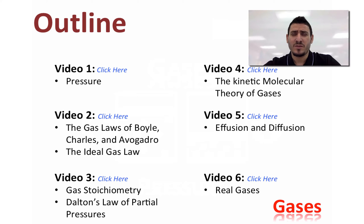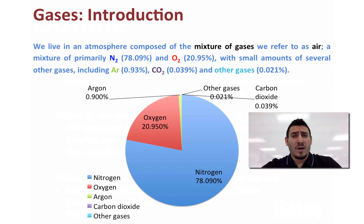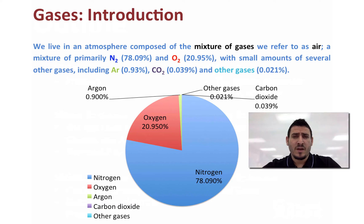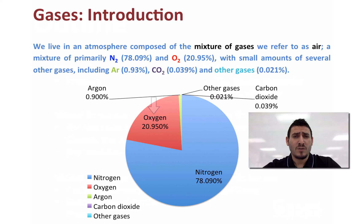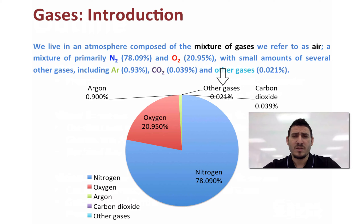As you know, we all live in an atmosphere full of a mixture of gases that we call air. Air is constituted mainly from nitrogen and oxygen, in addition to a small amount of several other gases, like argon or carbon dioxide or many others.